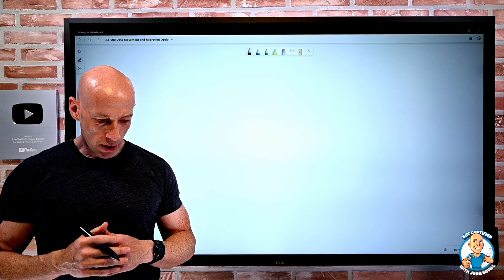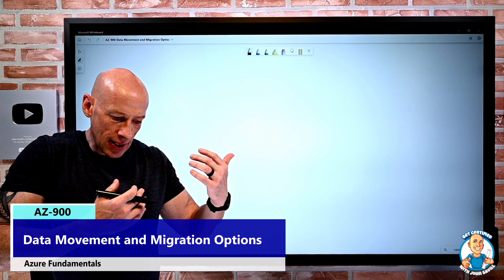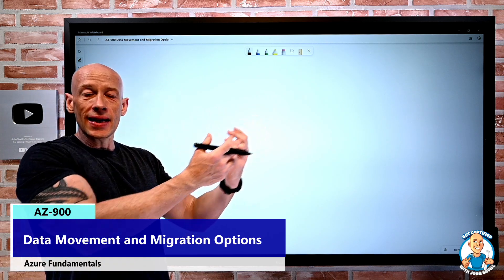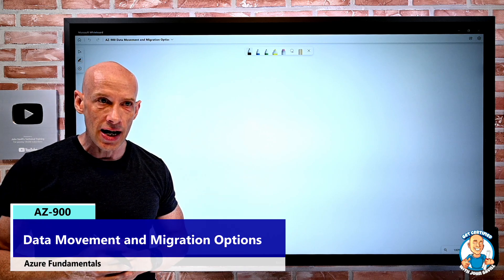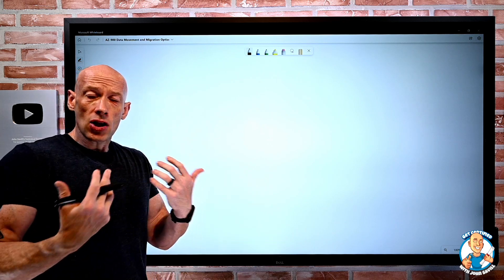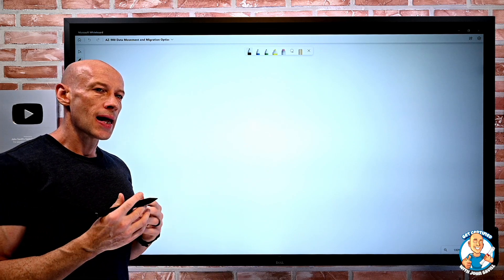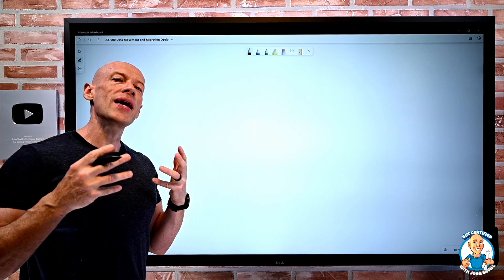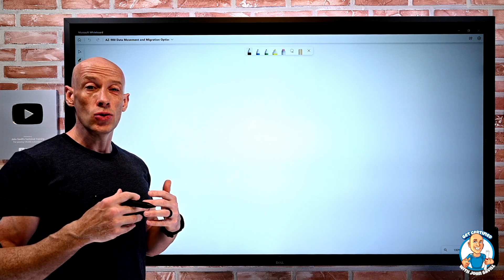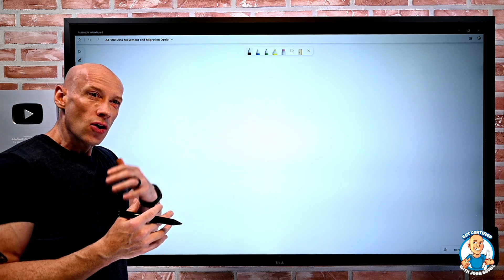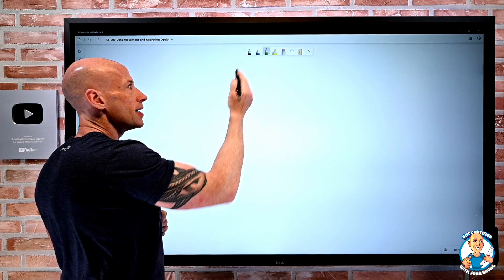In this lesson, I want to look at the various data movement and migration options we have available to get our data into and maybe out of Azure. Because many times we already have data on-premises. Depending on how we have that data, how it's used, how it's communicated to, and how we want to use it in the cloud, we have different options.